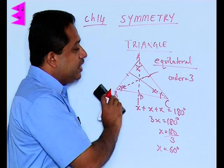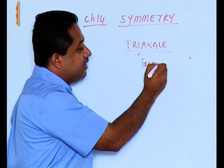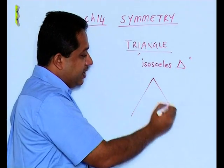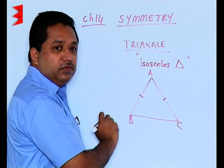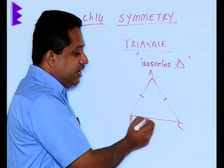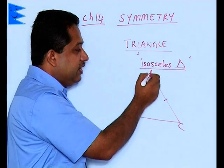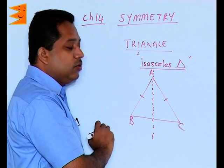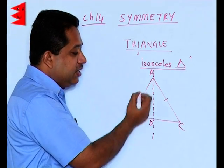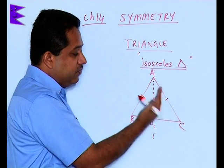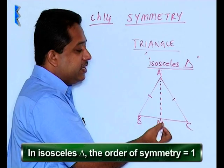The next type of triangle is when two sides are equal — that is called an isosceles triangle. Here we have triangle ABC where AB is equal to AC, so two sides are equal. This side BC is of a different dimension, which is why we call this triangle isosceles. In an isosceles triangle, there is only one line which can divide the triangle into two identical parts, and that is through A. Triangle ABD and triangle ACD are exactly of the same dimensions — if you fold from here, ACD will coincide on ABD. So the order of symmetry here is only one.